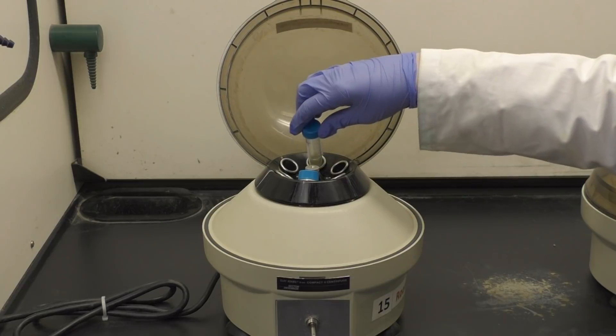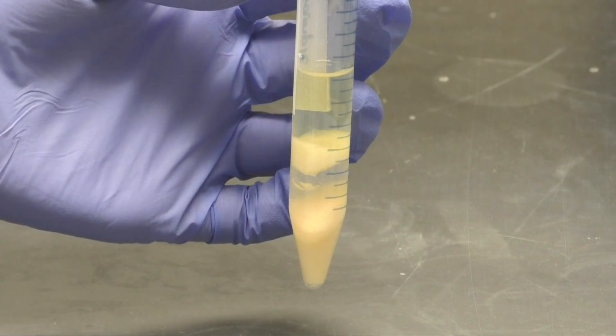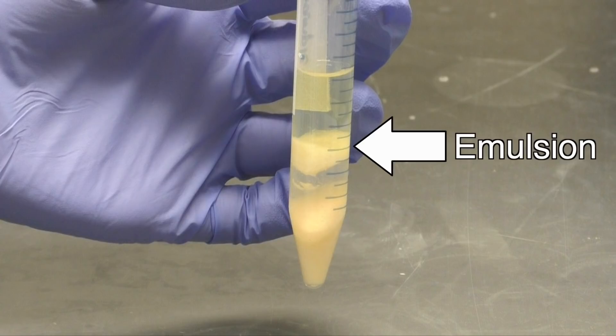After centrifugation, you will see three layers. The bottom one contains insoluble particles, and the two upper layers contain the separated macromolecules dissolved in the solvents we used. You might see a small, non-uniform layer somewhere near the middle. This is known as an emulsion.